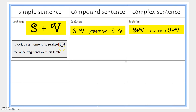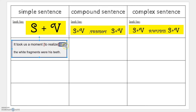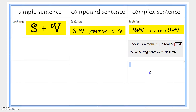That tells me that's where the clause begins. 'That the white fragments were his teeth' is my whole dependent clause — 'fragments' is the subject and 'were' is the verb. Over here in the independent clause, 'it' is the subject and 'took' is the verb. Since I found a dependent clause, I would glue that one in the complex column. You have one example done for you — remember, subjects and verbs on all of these need to be labeled to get full credit.